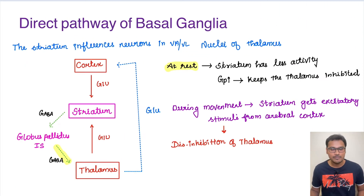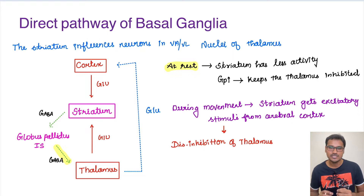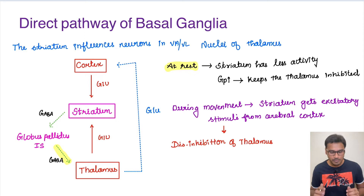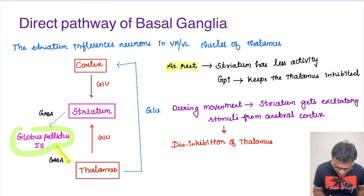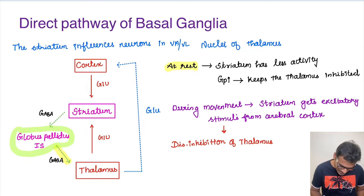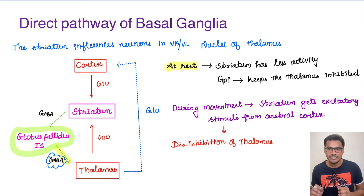Coming to the direct pathway of basal ganglia. The striatum has two inputs — one from the cortex and another from the thalamus — and from the striatum there are various outputs to the internal connections of basal ganglia. One chief output is to the globus pallidus internus (GPi), which in turn goes to the thalamus. So the thalamus can be directly influenced by the globus pallidus internus, and importantly, GPi has an inhibitory action on the thalamus.